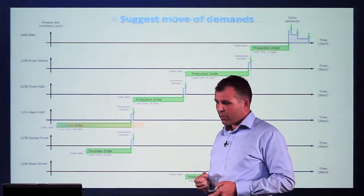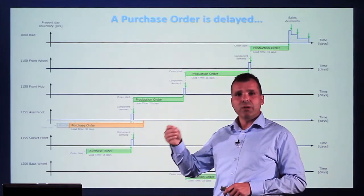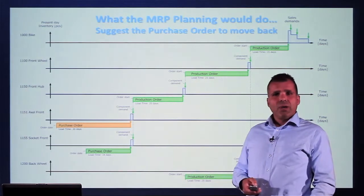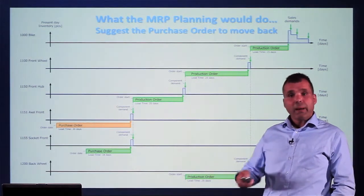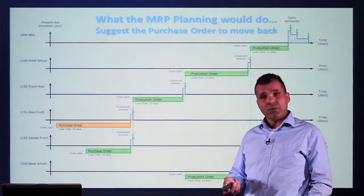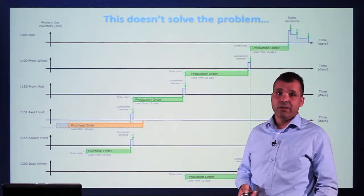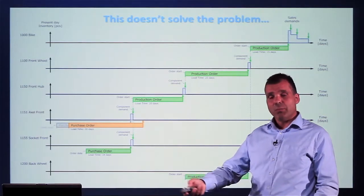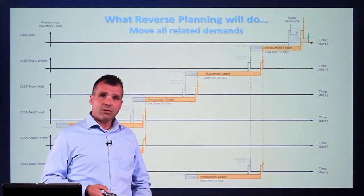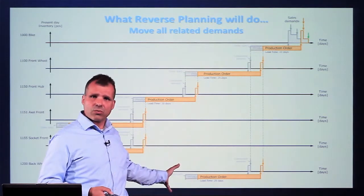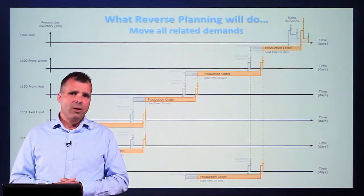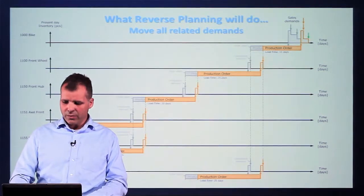The problem arises if one of our purchase orders cannot be delivered on date — in this case delayed by one week because the vendor can't deliver. What the MRP journal would suggest is just to move the purchase order back, but the vendor already told us he cannot deliver, so the purchase order is genuinely delayed. What we need instead is to calculate bottom-up to find out that we should move all related orders and sales order demands accordingly, so we don't get items unstuck too early and can tell our customers when we can actually fulfill the orders.